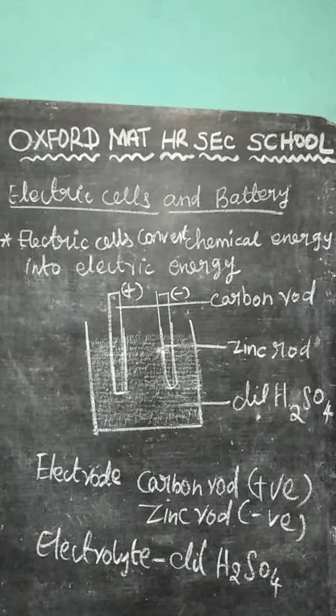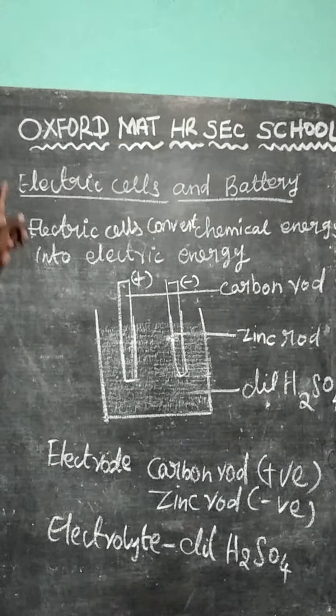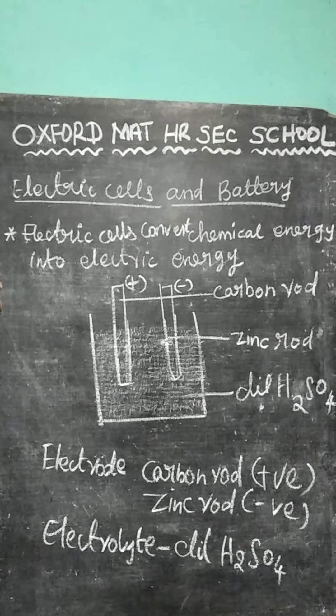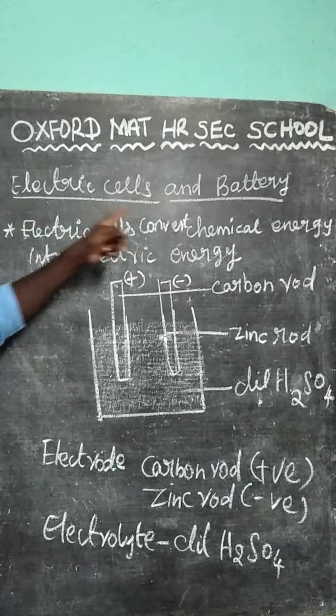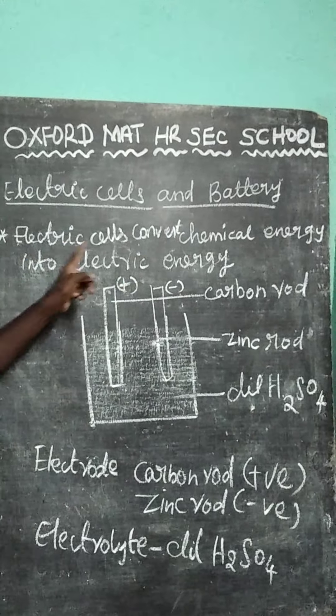Hi student, today I am going to teach electric cells and battery. So what is electric cell? Electric cell is a device. It converts chemical energy into electrical energy.